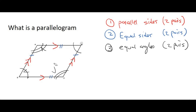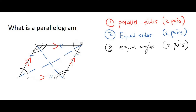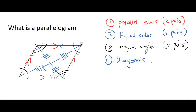The last property we need to cover is diagonals. The lengths of the diagonals are not the same — one is longer than the other. But each diagonal is cut in half at the intersection: this half equals that half, and this half equals that half. So the diagonals bisect each other. That is a parallelogram — you need to know this.